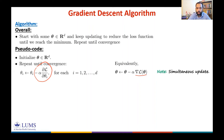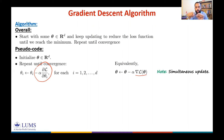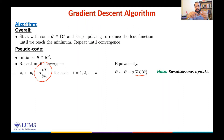An important point: in this update step we must perform simultaneous updates. This means that when updating θ₁ and then moving to θ₂, you should not use the already-updated value of θ₁. If the update of θ₂ depends on θ₁, you must use the previous value of θ₁.